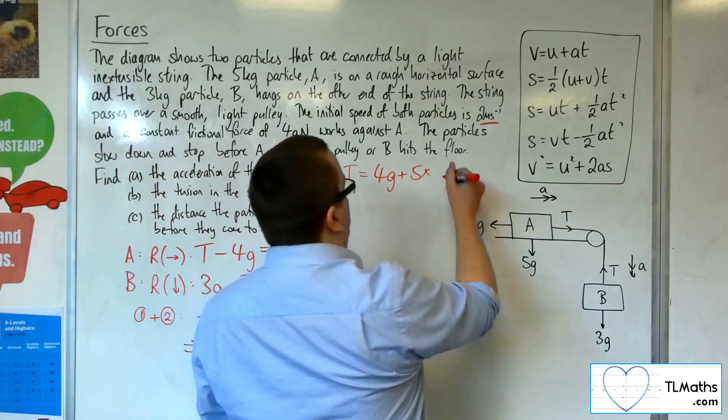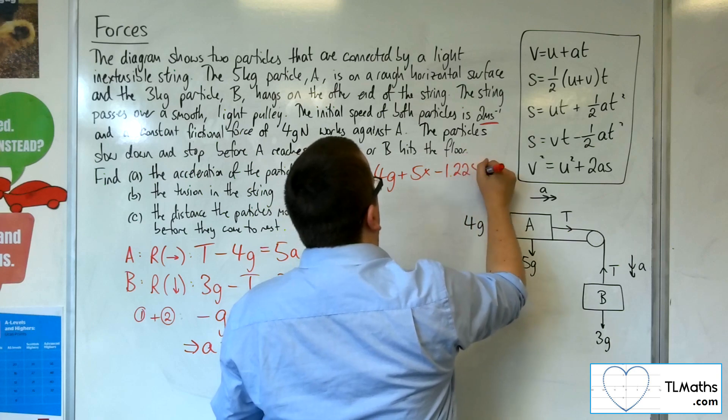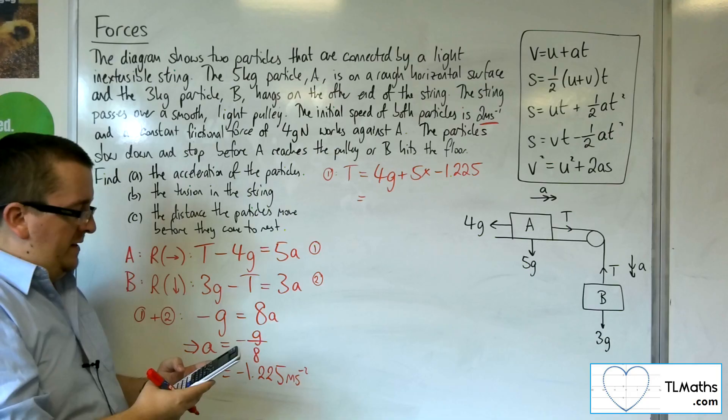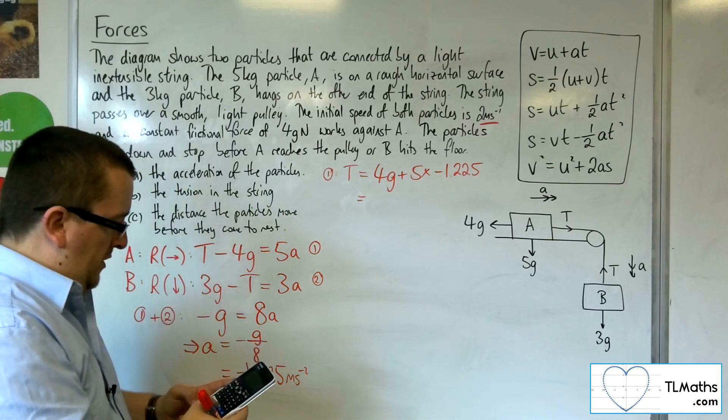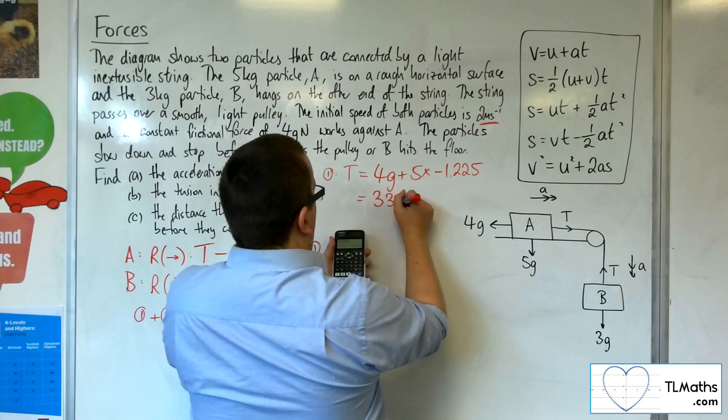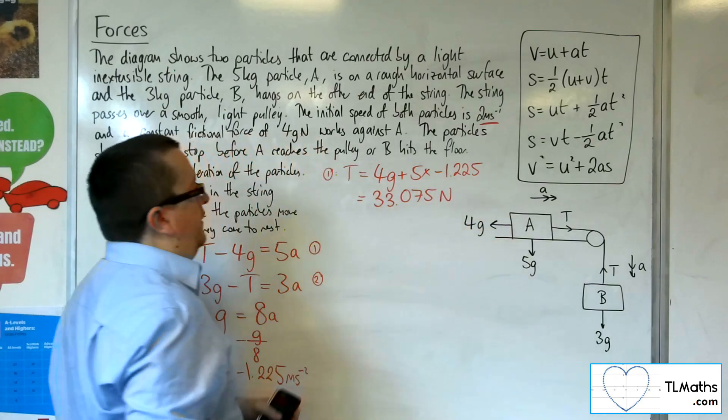So 5 lots of my previous answer, and then I'm adding on 4 lots of 9.8, and we should get 33.075 newtons.